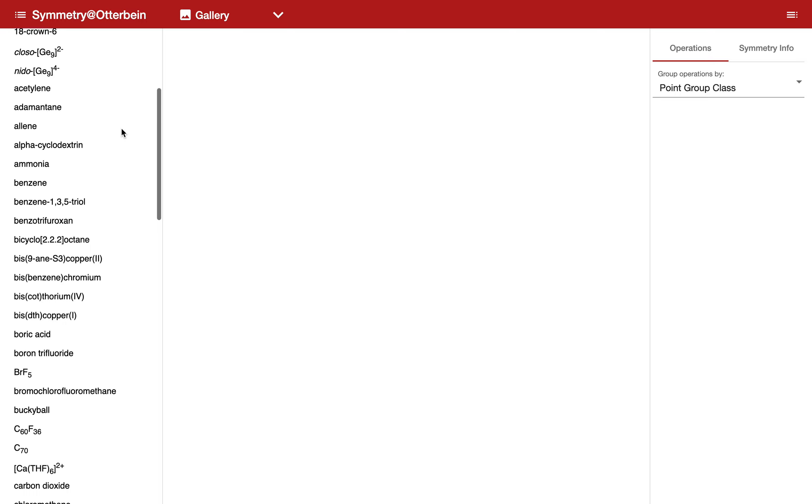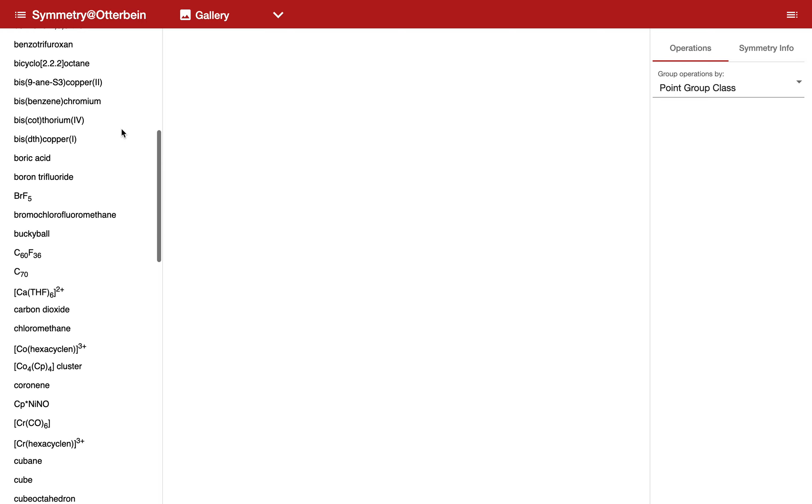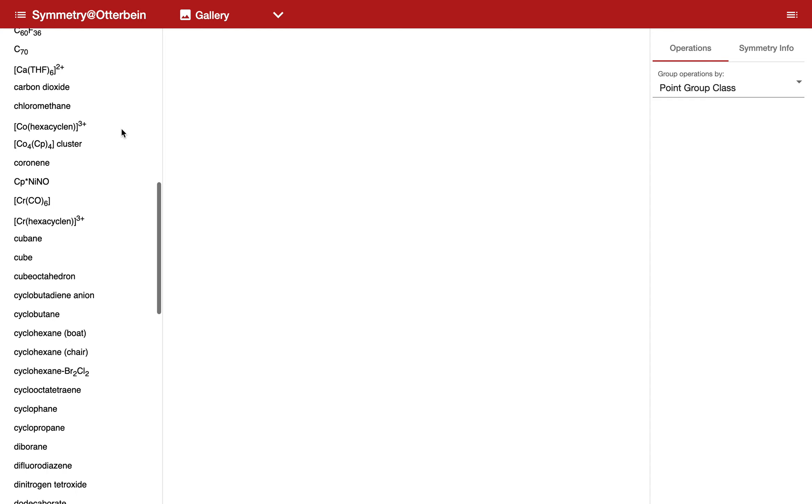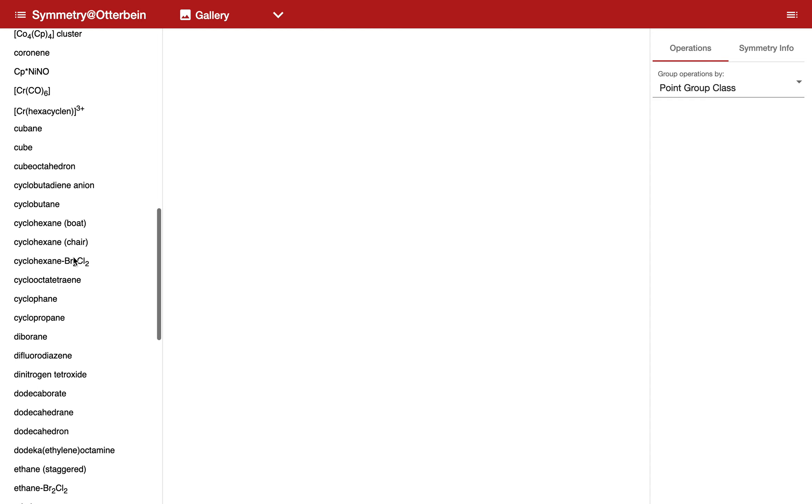In each of these cases, if I select the molecule, I can then get a reading of the symmetry elements that belong to that molecule. For example, cyclooctatetraene. This is a little bit of an exotic one, but let's take a look at it.